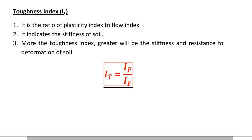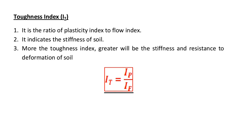Next we are going to see the definition of toughness index. It is the ratio of plasticity index to flow index, and it also indicates the stiffness of the soil. The more the toughness index, the greater will be the stiffness and resistance to deformation of the soil. Toughness index IT = IP divided by IF.